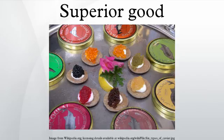A superior good also may be a luxury good that is not purchased at all below a certain level of income. Examples would include smoked salmon and caviar, and most other delicacies. On the other hand, superior goods may have a wide quality distribution, such as wine and holidays.